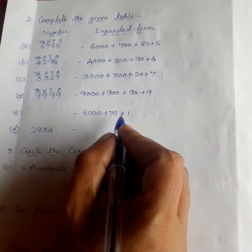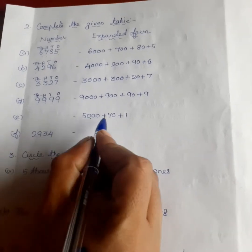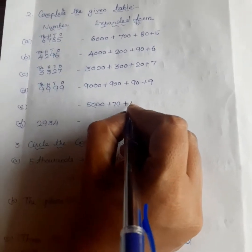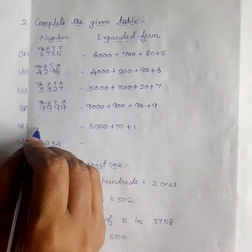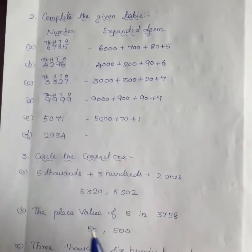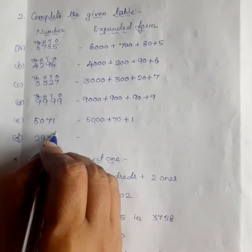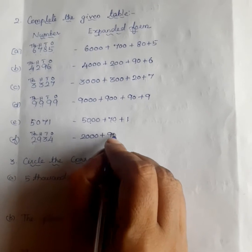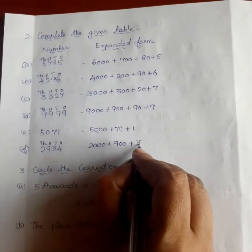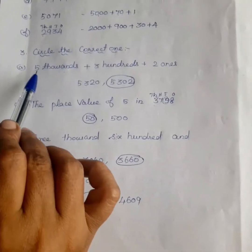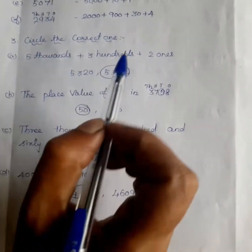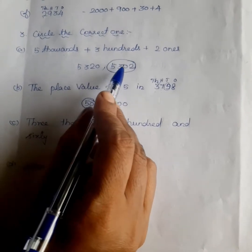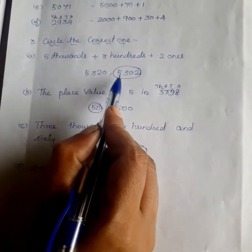Now the expanded form is given and you write the number. For example, 5000 plus 70 gives 5070; with 7 in the 10's place and 1 in the 1's place, the number is 5071. For 2000 plus 900 plus 30 plus 4, the number is 2934. For 5300 plus 0 tens plus 2 ones, the number is 5302.